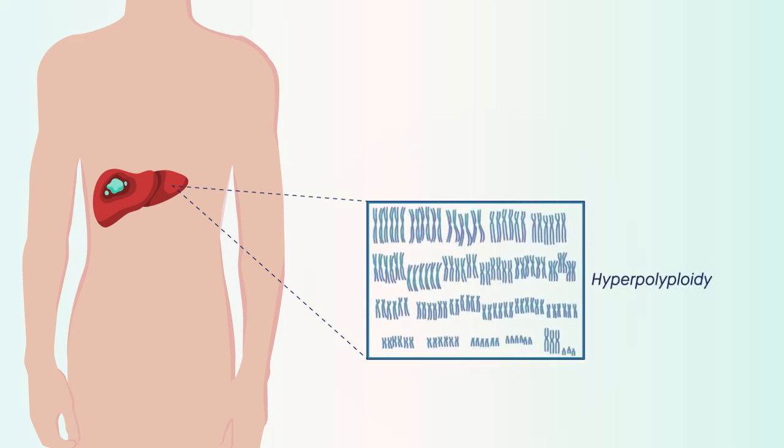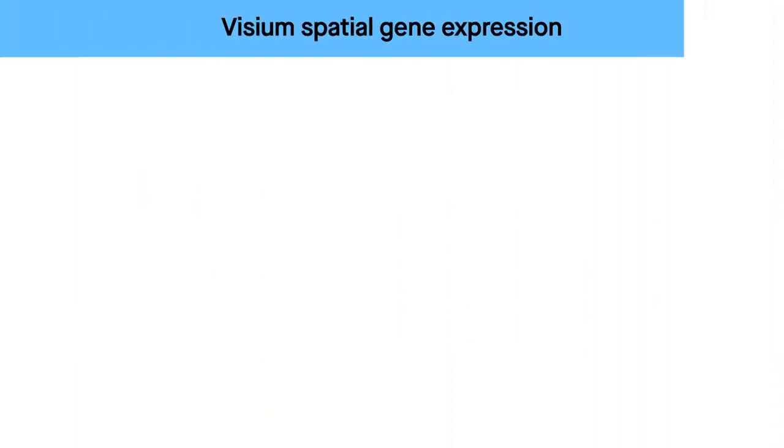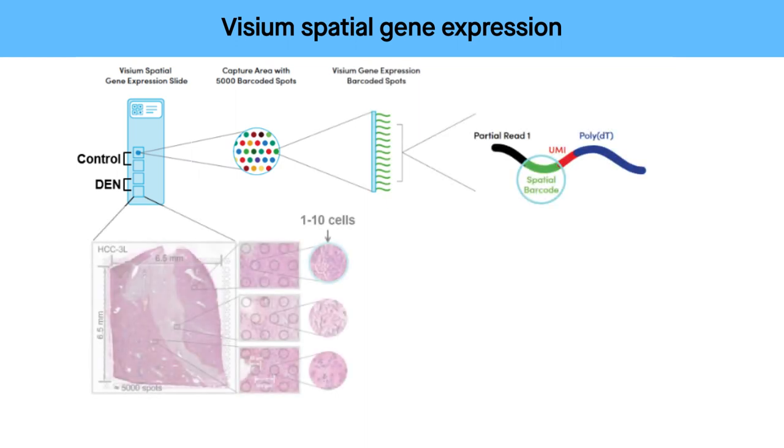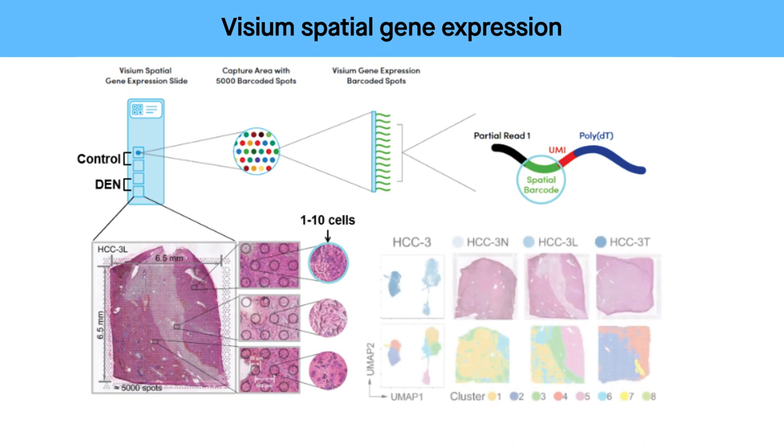But perhaps more importantly, they identify hyperpolyploidy as a potential biomarker for the early diagnosis and prevention of liver cancer. The researchers aim to use advanced fingerprinting techniques from Visium spatial gene expression to transcriptomics, proteomics, and metabolomics to study the markers and signaling pathways that control hyperpolyploidy in liver cells.